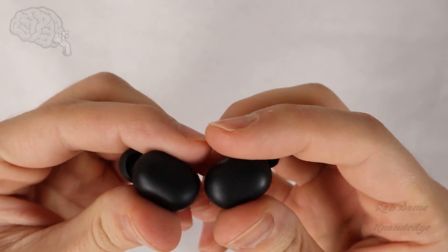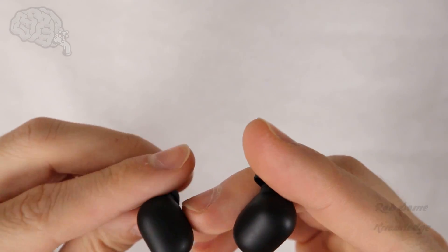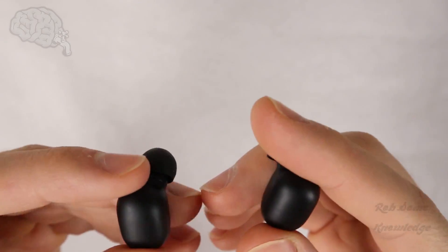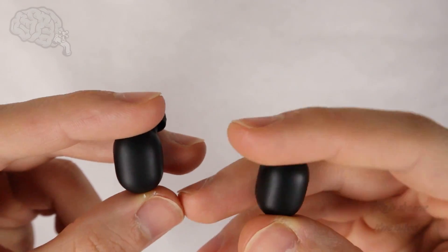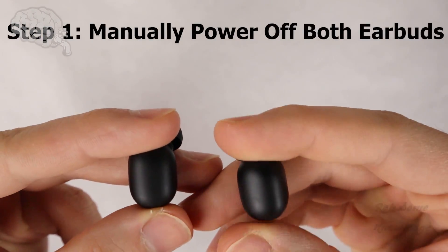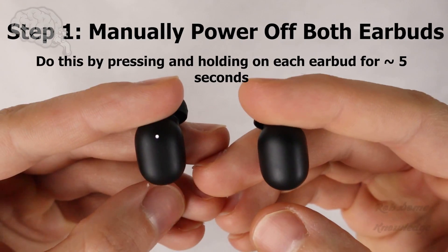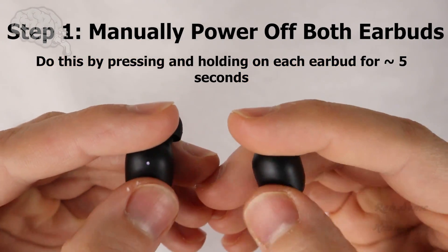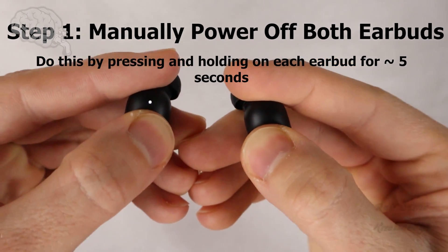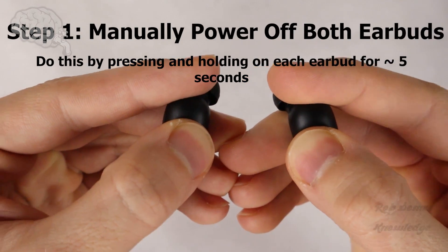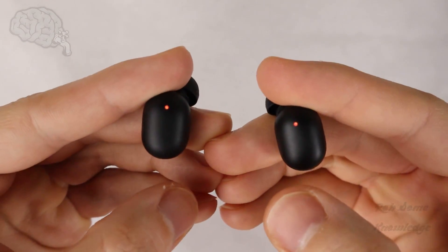Okay, hold both of them. They will be on since you just took them out of the case. Press and hold on the touch controls for both of them to turn them off manually, for about five seconds. You'll see the red light come on when they turn off. One, two, three, four, five, and now they're off.